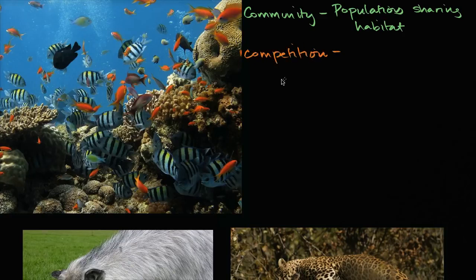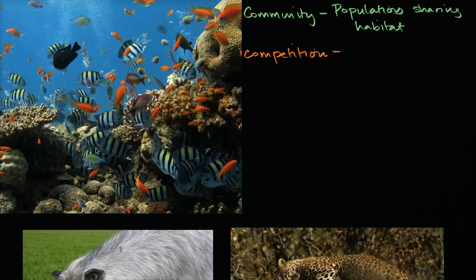Competition is when different populations, different species, are competing for the same resources. You can imagine a forest where you have different populations of plants competing for sunlight, water, or nutrients in the soil. Even in this picture right here — a community of fish, sea anemones, and coral all sharing the same region — many of them could be in competition, going after the same food or the same shelter.